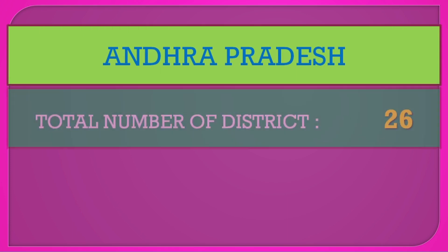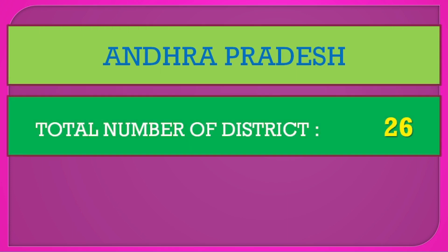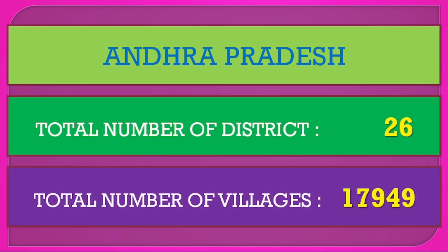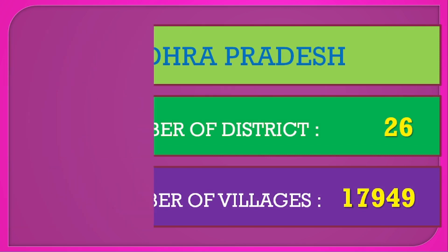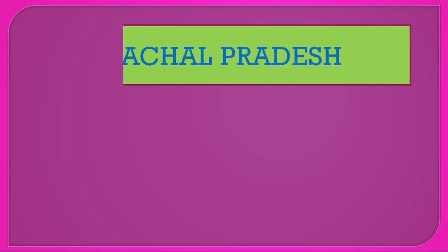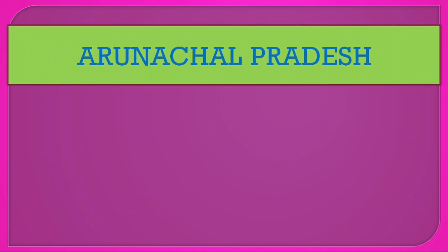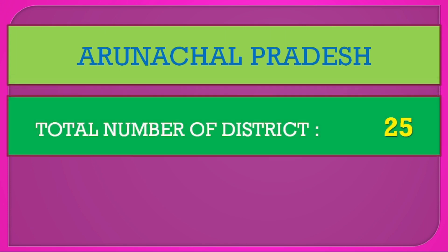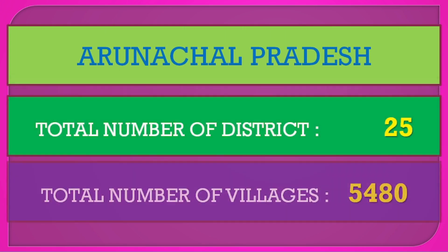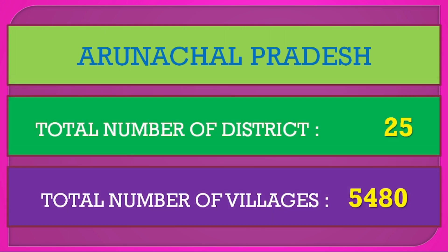Andhra Pradesh: total number of districts 26, total number of villages 17,949. Arunachal Pradesh: total number of districts 25, total number of villages 5,480.